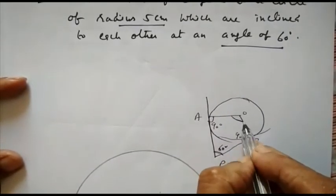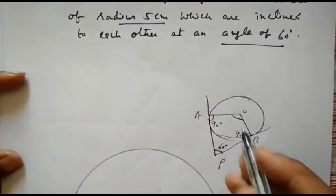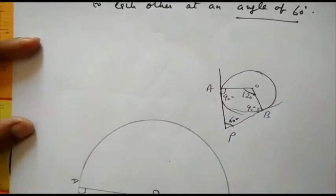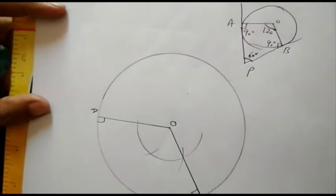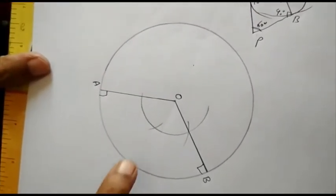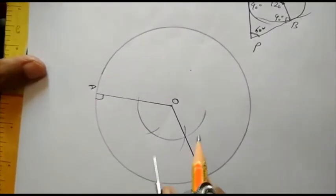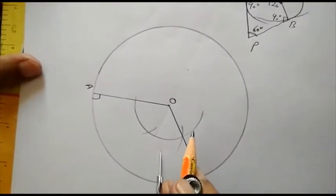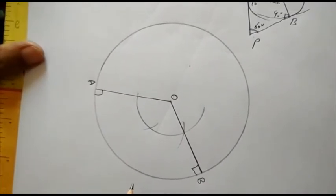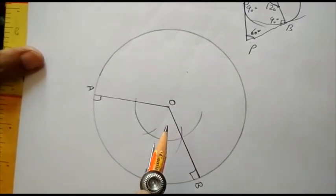So at the center, I will make an angle of 180 minus 60, that is 120. So same process we have followed here. We need that tangents are inclined at 60, so at the center, we will make an angle of 120. Suppose the tangents are inclined at 75, then angle at the center will be 105.